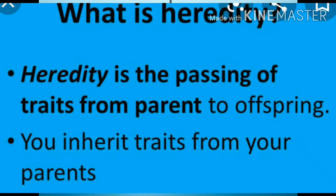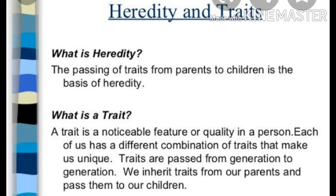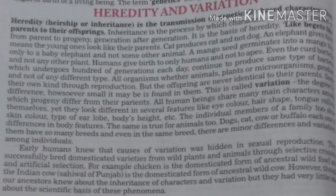The term genetics, from the Greek word meaning 'to generate,' was coined by British biologist William Bateson (1861–1926) in 1905. Although the beginning of the science of genetics was made in 1900 by the rediscovery of Mendel's work, genetics may be defined as the branch of biology concerned with the study of heredity and variation in organisms. Genetics occupies a central position in modern biology and can be applied to all microbes, plants, and animals.